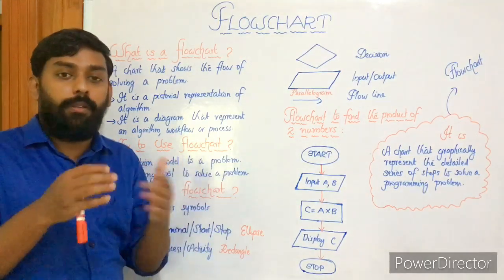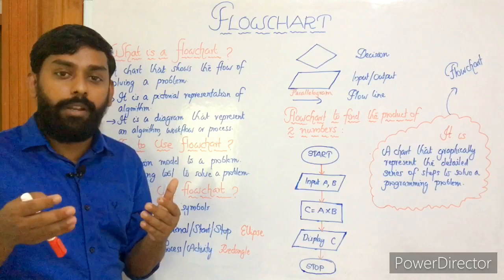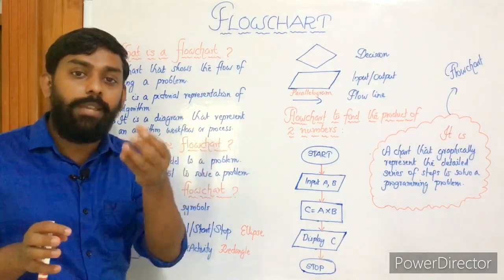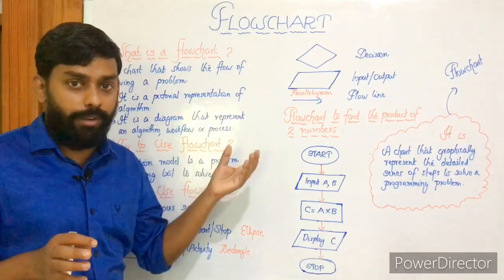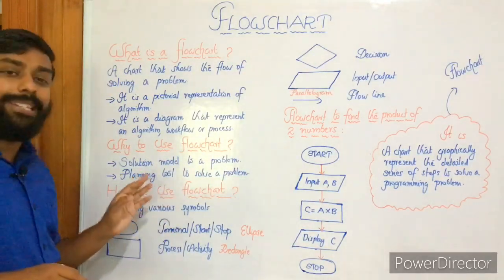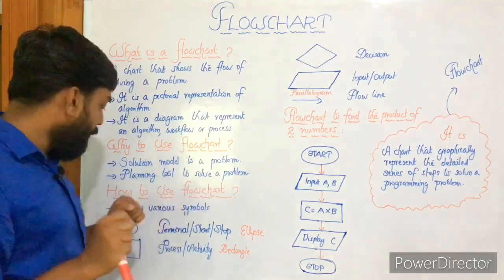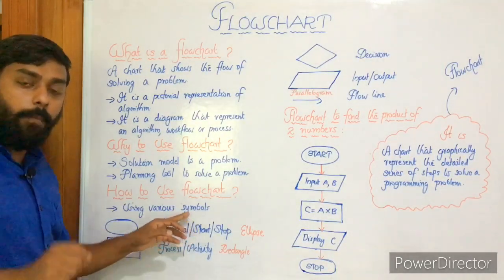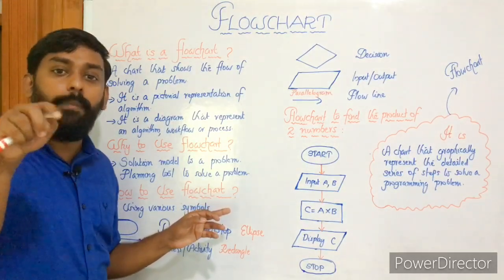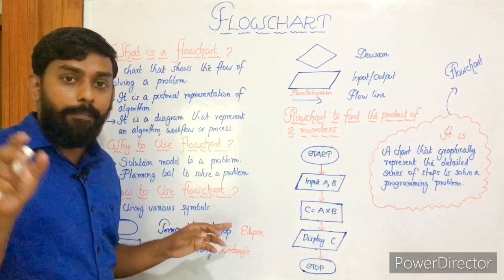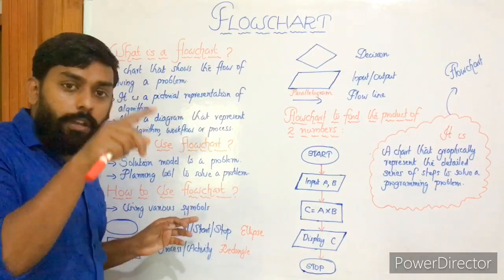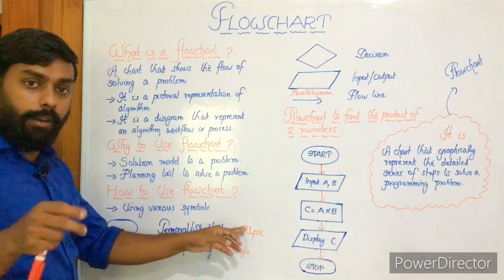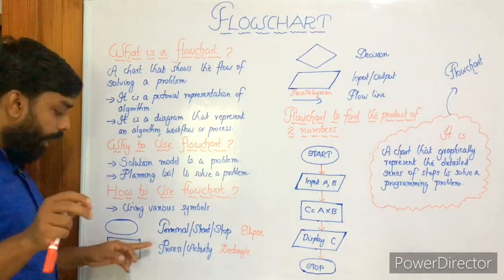How to use flowchart? Since flowchart uses graphical notation, we need to know which symbols are used for constructing a flowchart. The first symbol is called terminal, also known as start or stop. In algorithm we write 'start,' but in flowchart we use this terminal symbol. The mathematical name for this shape is ellipse. The second symbol is rectangle, called process or activity in flowchart terminology.